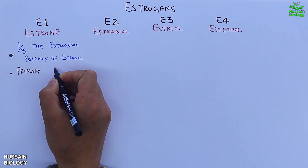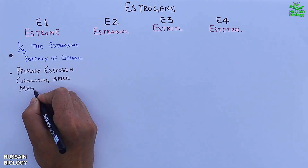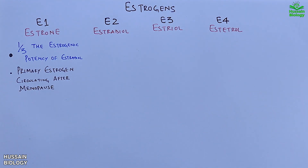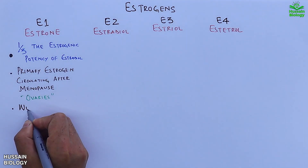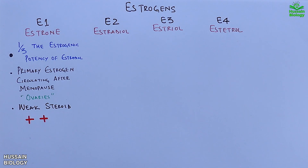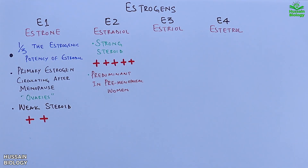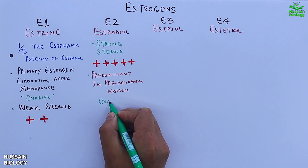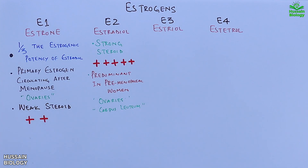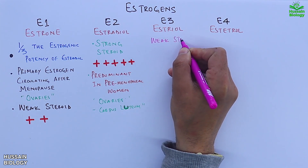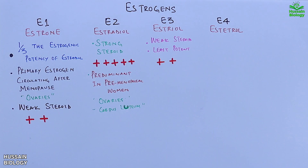E1 (estrone) is the primary estrogen circulating after menopause. It is synthesized in the ovaries and is a weak steroid. E2 (estradiol) is a strong steroid which is predominant in premenopausal women and is synthesized in the ovaries and corpus luteum. E3 (estriol) is a weak steroid and is the least potent estrogen.